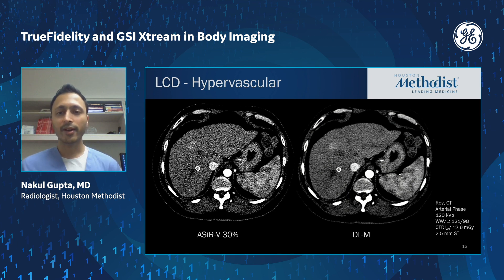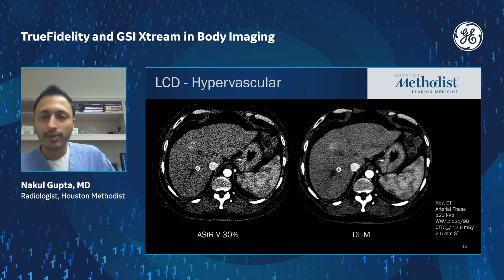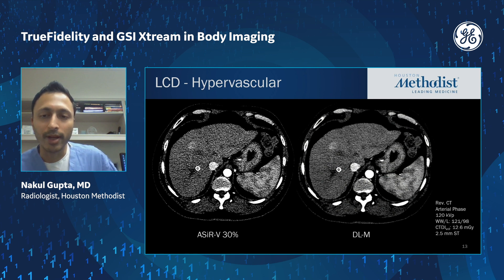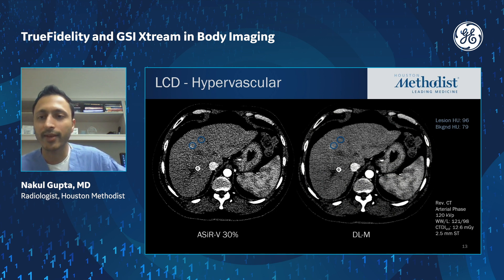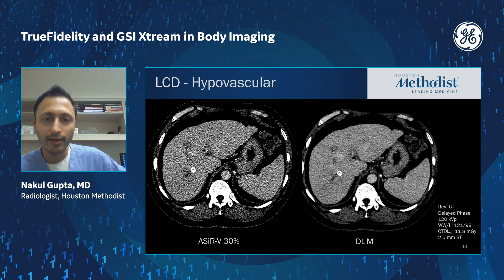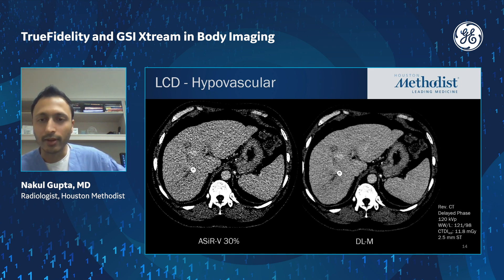Low contrast detectability is another area where deep learning reconstruction can be helpful. Here's an example showing a hypervascular lesion of low to mid contrast level, requiring pretty aggressive window level adjustments to make it conspicuous. On the deep learning medium reconstruction, the lesion is more conspicuous than on the ACER-V image — the contrast difference between lesion and background was about 17 Hounsfield units. Looking at the same lesion in the portal or delayed washout phase, the lesion-to-background contrast is similarly more conspicuous on the deep learning medium recon, with about a 16 Hounsfield unit difference.